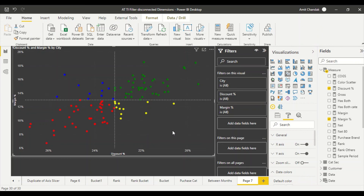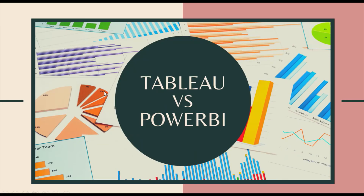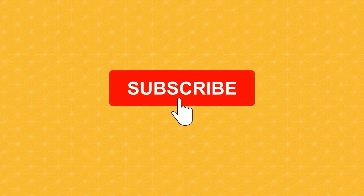In both Tableau and Power BI we've created a scatter visual with four quadrants having different colors. Go ahead and try it out and let us know what else you'd like us to cover in this series. Subscribe to the channel and press the bell icon to get notifications for new videos. Thanks for watching!